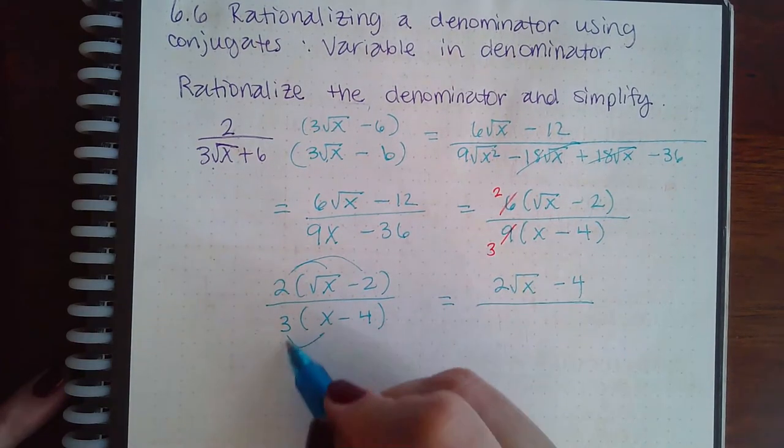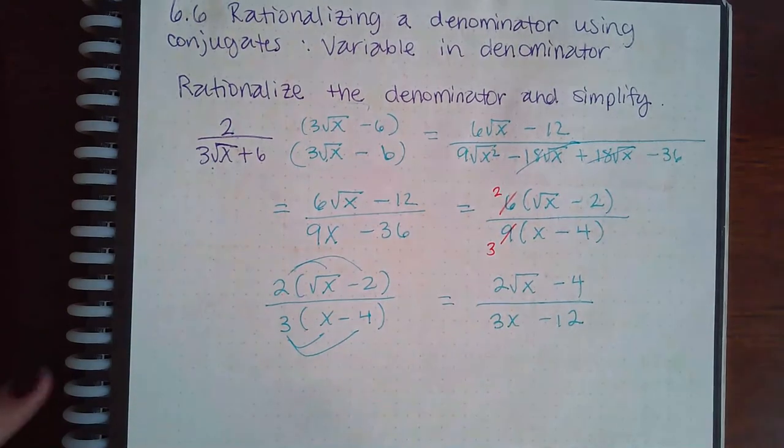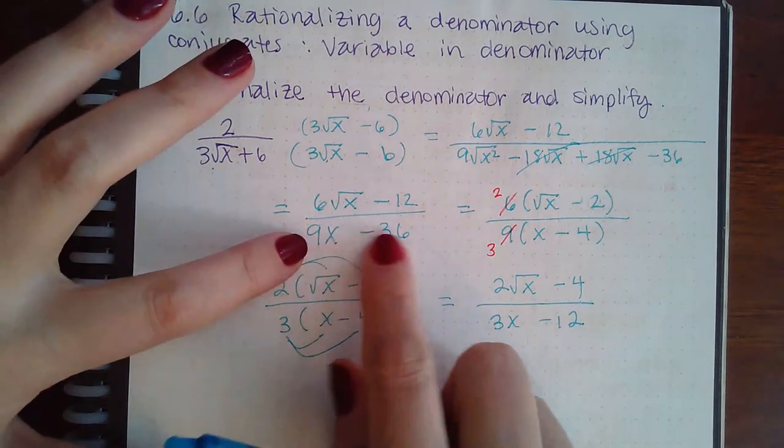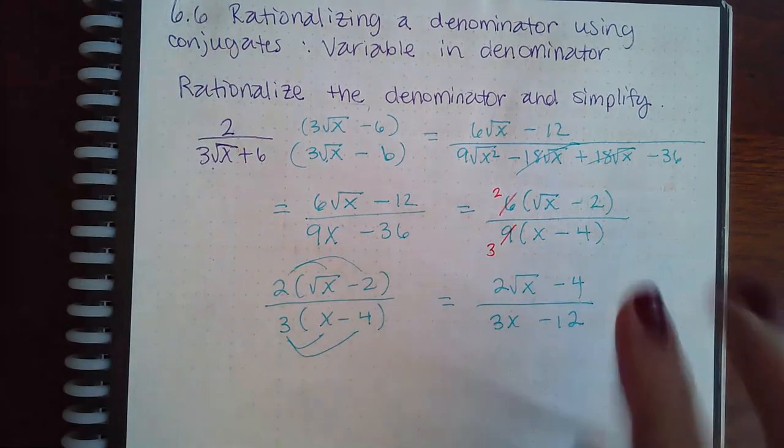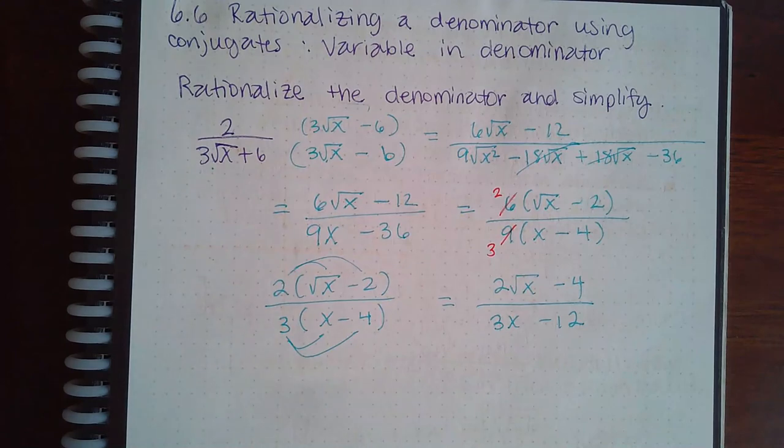And that will be your reduced final answer. So just be careful - when you only have one term in the denominator, you can split the fraction. But when you have two terms in the denominator, you have to factor the GCF and then see if you can cancel something from there.